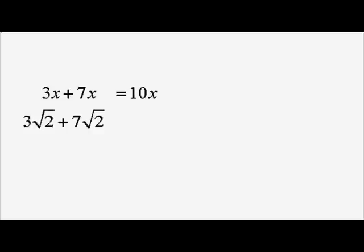So 3√2s plus 7√2s is 10√2s. There, the x and the √2 are sort of behaving in the same way.